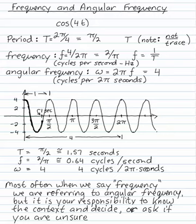Frequency and angular frequency. Two people look at the graph of cosine 4t, and one of them says the frequency is 4, and the other person says the frequency is 0.64. Well, which one is right?